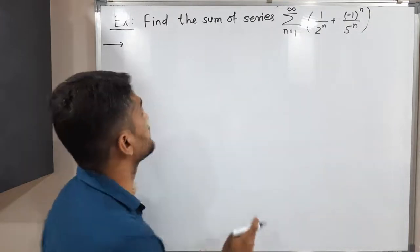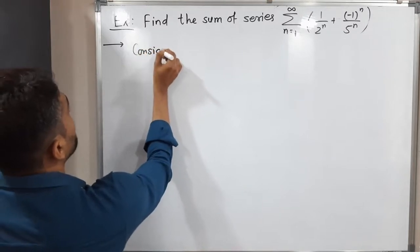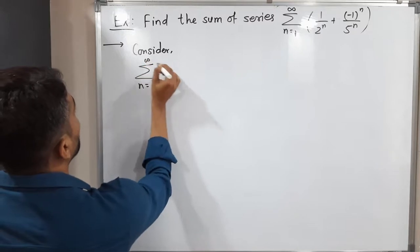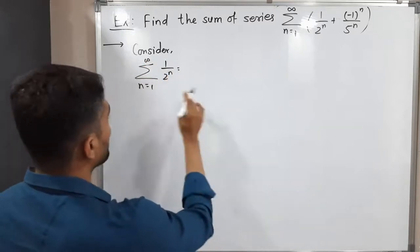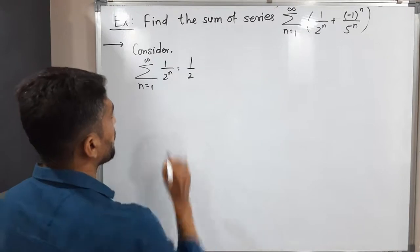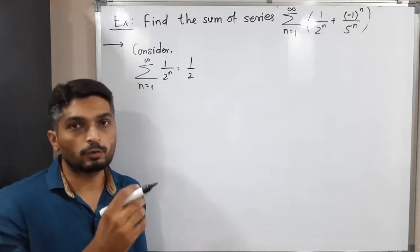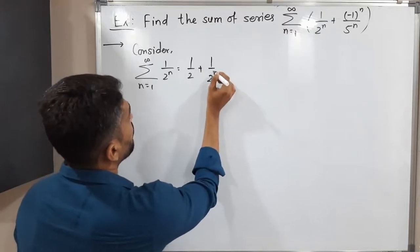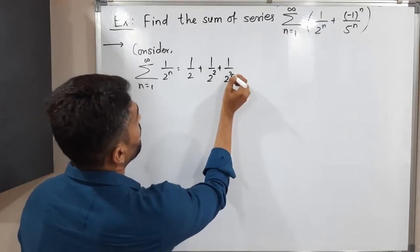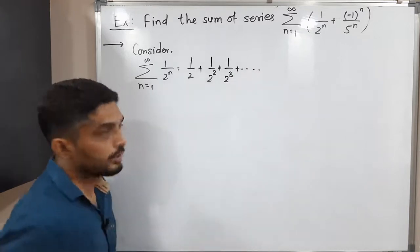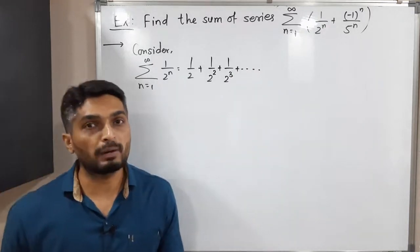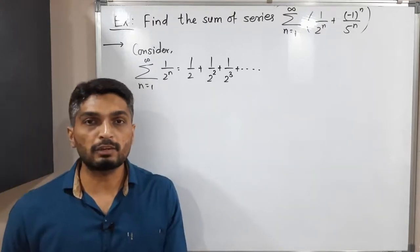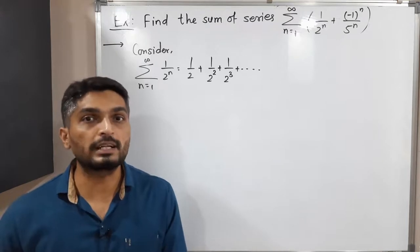Consider the first series: summation n running from 1 to infinity of 1 upon 2 raised to n. Let us expand the summation by putting n equal to 1, 2, 3, 4 and so on. We get 1/2 + 1/2² + 1/2³ and so on. You can easily see that if you multiply the first term by 1/2 we get the second term, and so on. So it is a geometric series.